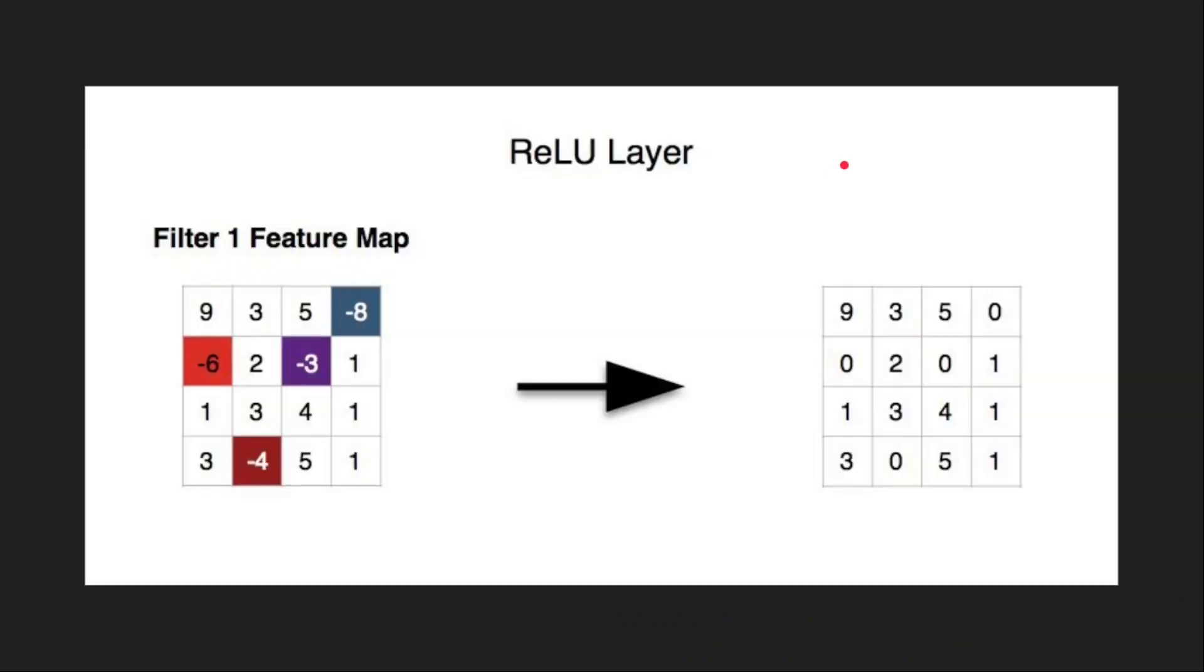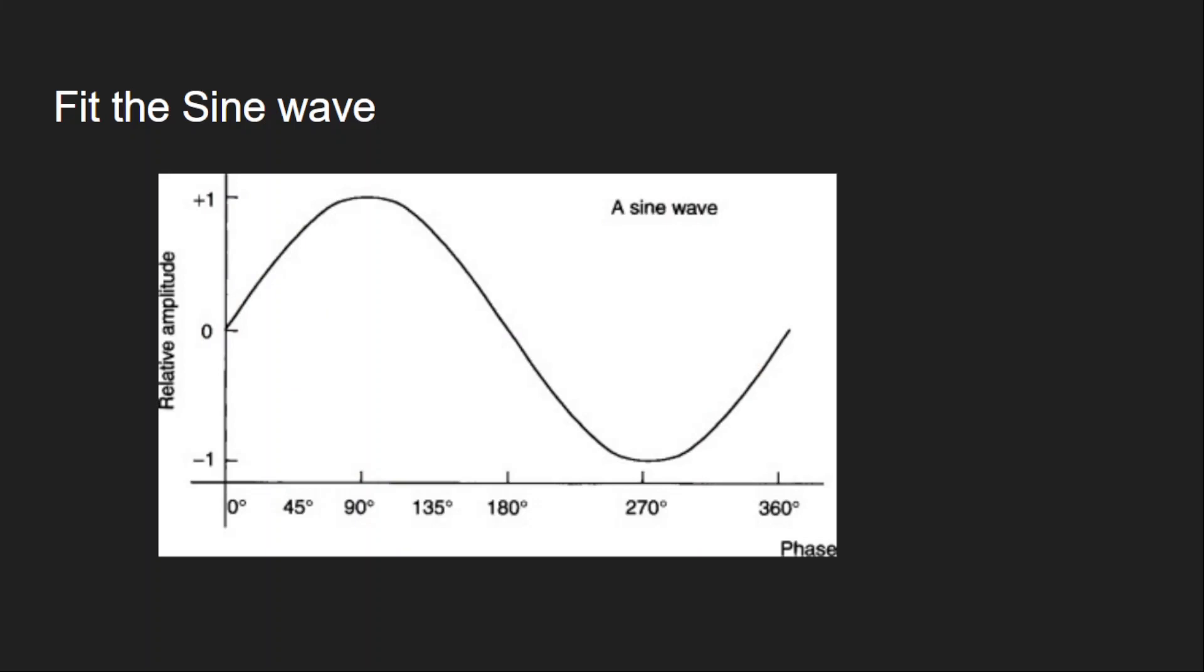It is such a simple function for implementation. You take just the maximum of zero or x. Just like here, let's suppose these are my inputs coming. You just keep only the positive values and make all the negative values as zeros. This will be the output of ReLU. This is a very simple function.